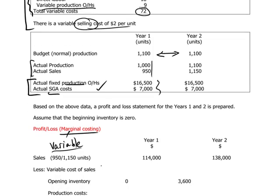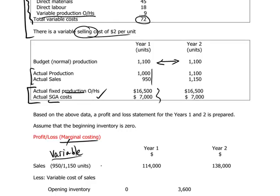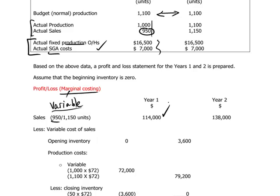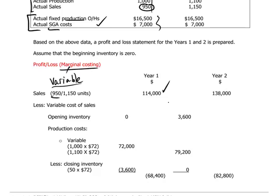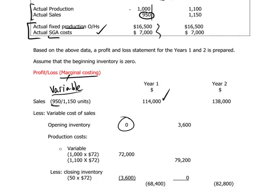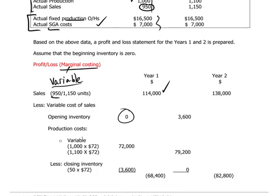Taking the numbers from the scenario, if we have actual sales in year one of 950 units, 950 times the selling price of $120 gives us sales revenue of $114,000. When we get to the costs, we have to be careful. We want to focus only on the variable costs of production when we use the marginal costing system. The variable costs of sales for these 950 units are determined as follows. We start with opening inventory, which in this case is zero. The actual production is more than the sales figure — we produce 1,000 units — so 1,000 units times $72 gives us $72,000.